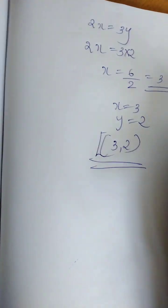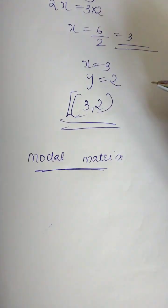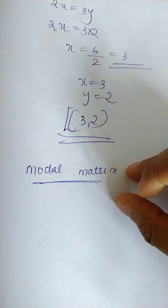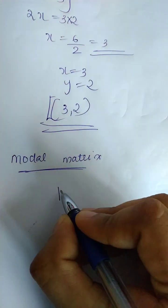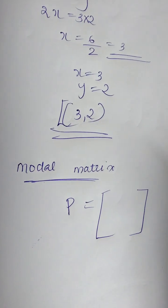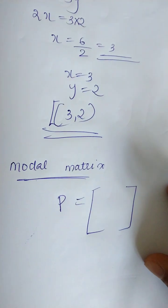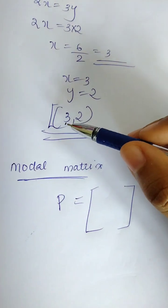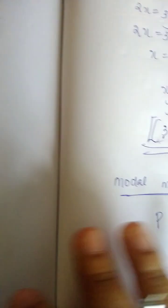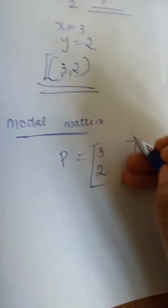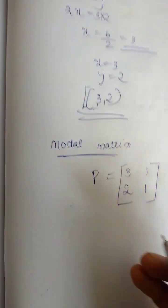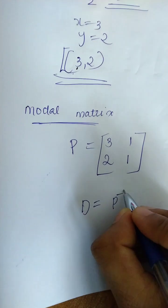Now we have two eigenvectors. We are going to start building the modal matrix P. The modal matrix is formed from the eigenvectors. It is P with columns [3, 2] and [1, 1]. Diagonalization gives D equal to P inverse A P.